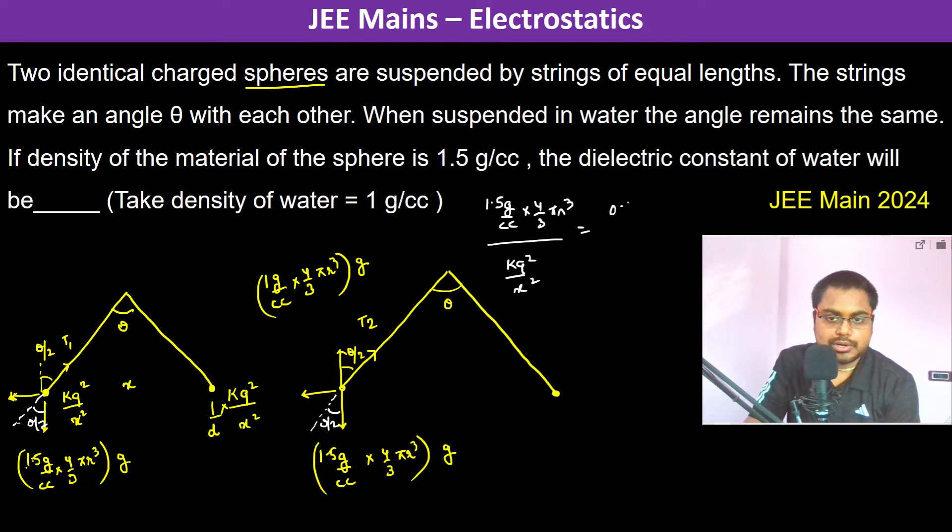0.5 grams per cc into 4 by 3 pi r cubed, both sides multiplied by G, divided by K Q squared by D X squared.